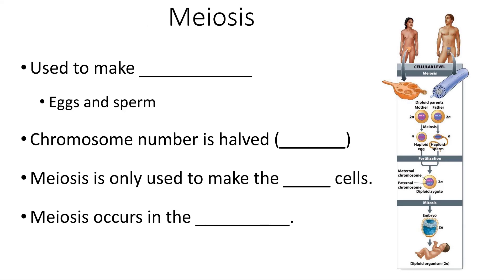Now there is a second form of cell division that's different than mitosis. Mitosis makes two daughter cells that are exactly the same as the parent. Meiosis makes gametes that have half the number of chromosomes as the original cell.